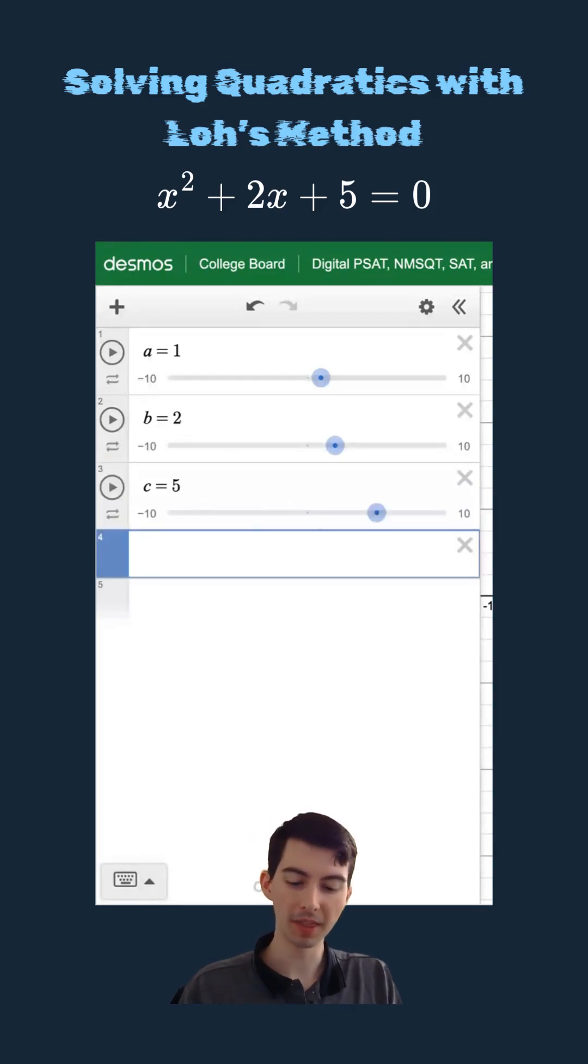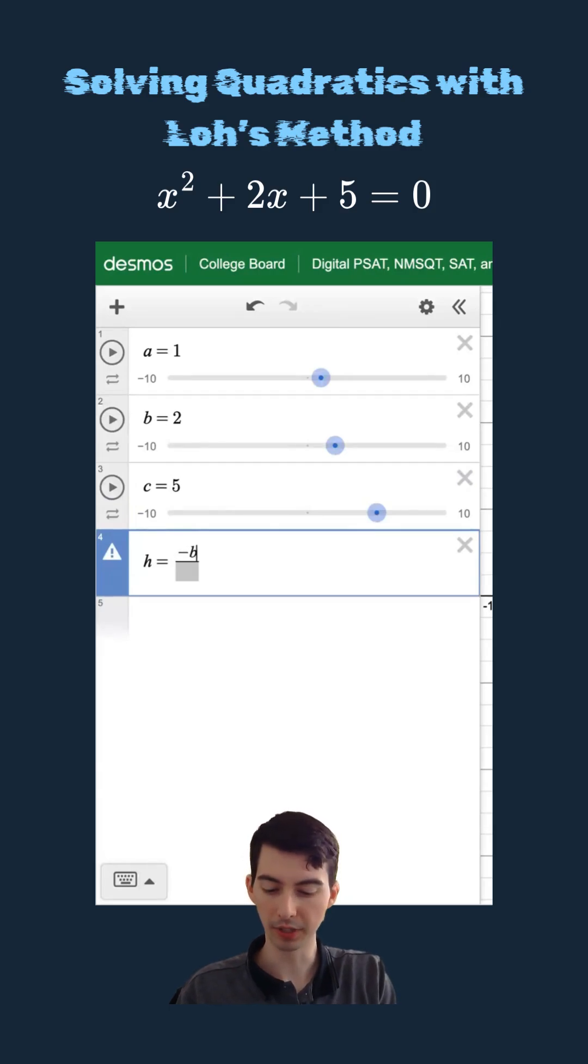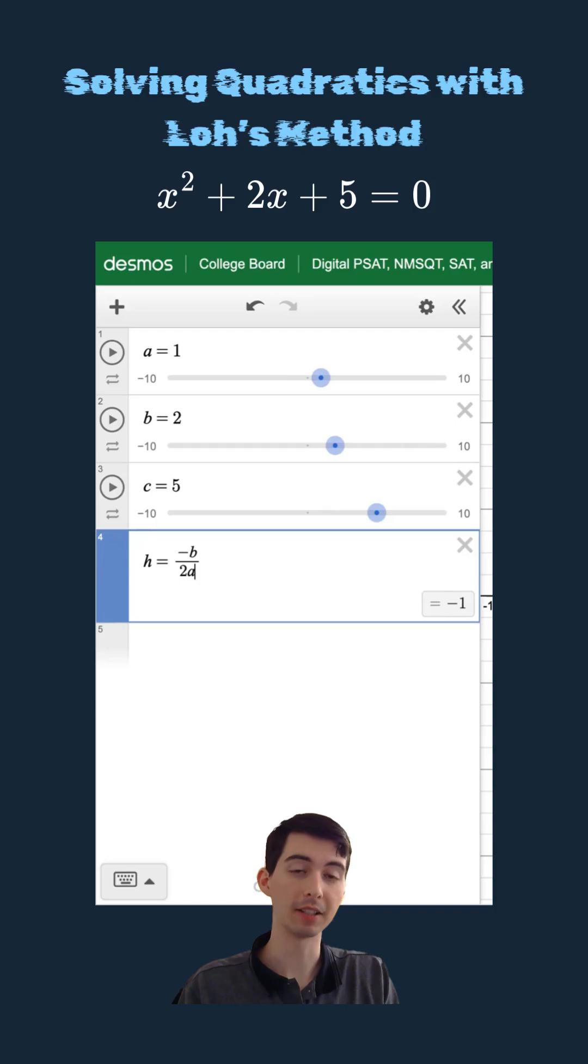Now, I want to find the axis of symmetry, which I'm going to call h, and I know h is equal to negative b over 2a. So my axis of symmetry is x equals negative 1.